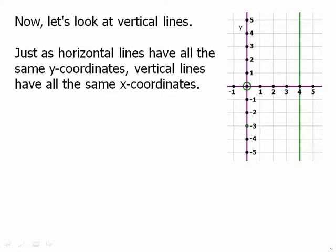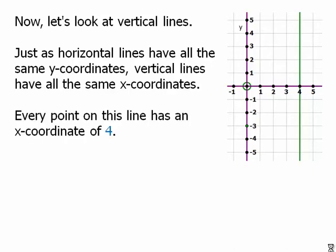So, here we see that the line crosses the x-axis at 4. And we see that all the points above it and below it are at that same distance to the right of the y-axis. So, they all have to have an x-coordinate of 4.